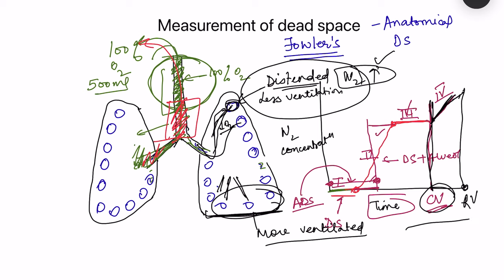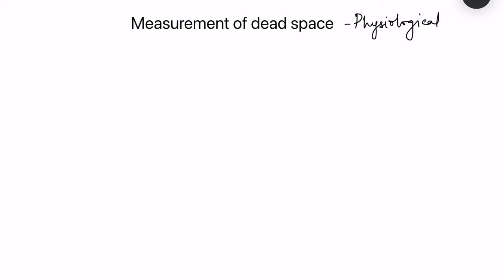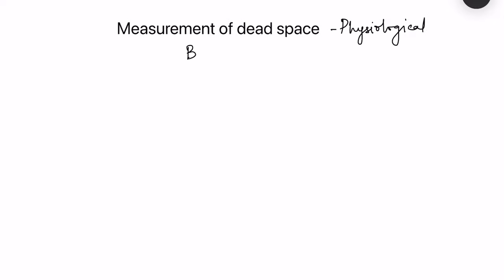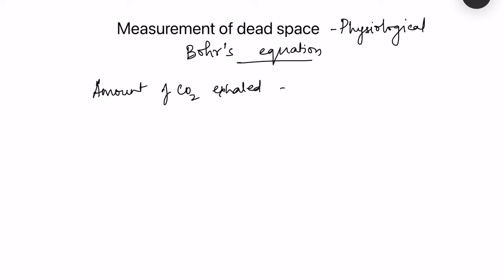For measurement of physiological dead space — which is the combination of anatomical dead space plus alveoli that are only ventilated and not perfused — we use an equation known as Bohr's equation. For this we need to measure the partial pressure of carbon dioxide in the expired air and in the alveolar air. The concept is that the amount of carbon dioxide exhaled equals the total CO2 present in both the respiratory passages and the alveoli.